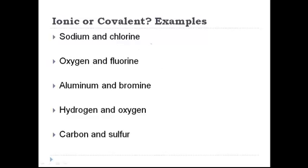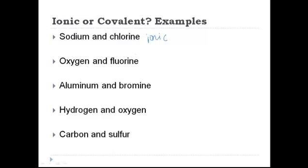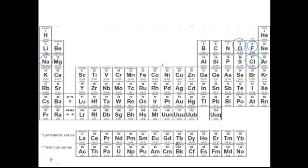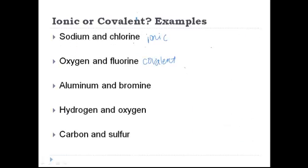What about oxygen and chlorine? Oxygen is over on the right-hand side and so is chlorine — they're both nonmetals. So they're not going to transfer an electron; they're going to share a pair of electrons in a covalent bond. How about aluminum and bromine? Aluminum is sort of towards the right-hand side, but the line separating metals from nonmetals means aluminum is actually a metal. Bromine is definitely a nonmetal. So aluminum and bromine are going to make an ionic bond.